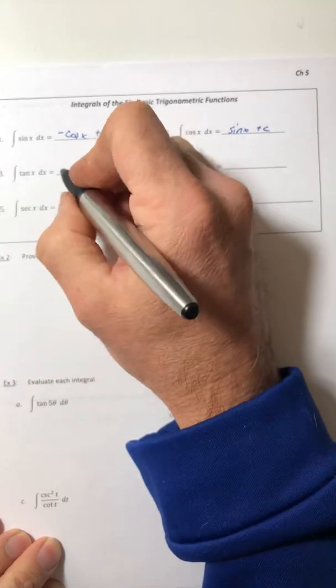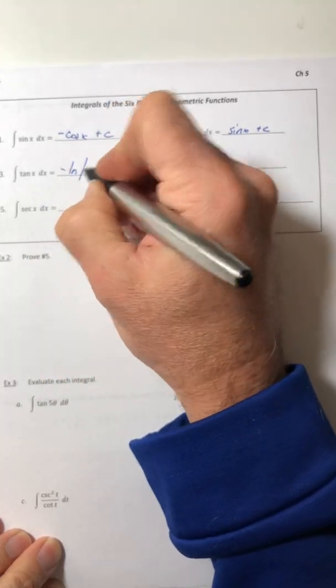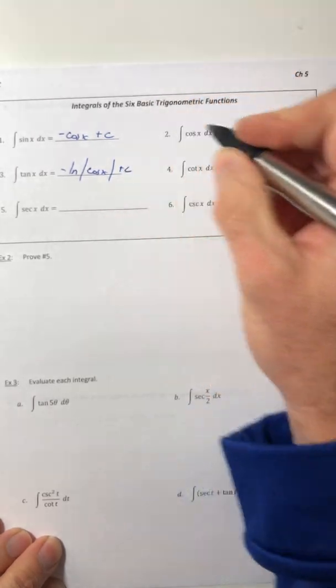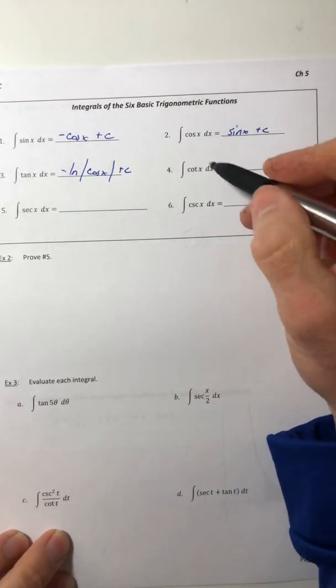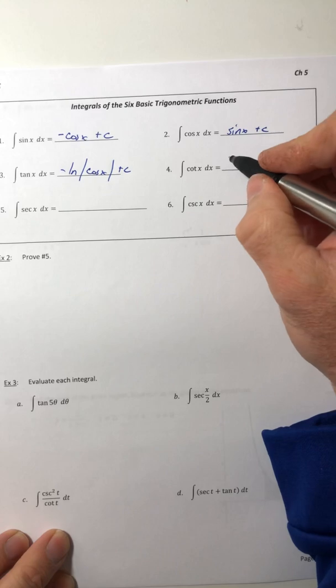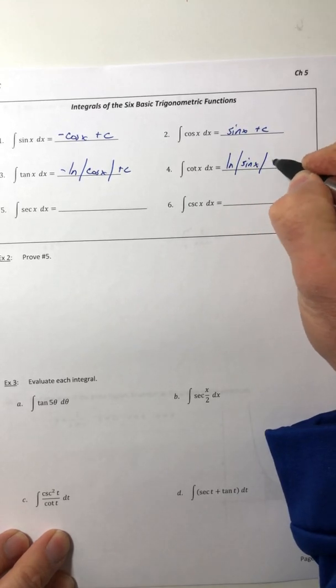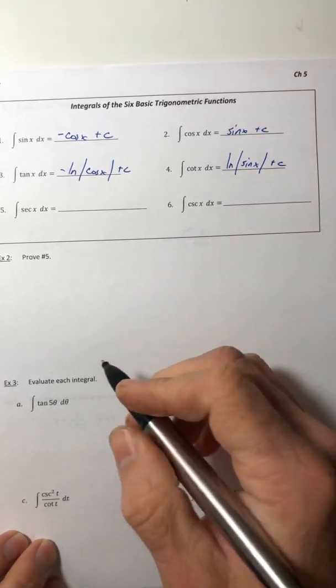Tangent we just did, negative ln absolute value of cosine of x. And then cotangent, if we did it in the same way, comes out to ln absolute value of sine of x plus c.